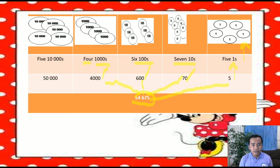Next, we have 5 ten-thousands. That is equivalent to 50,000. So you are going to draw 5 ten-thousand disks: 1, 2, 3, 4, 5. There you go. We have already illustrated the number 54,675 using disks.